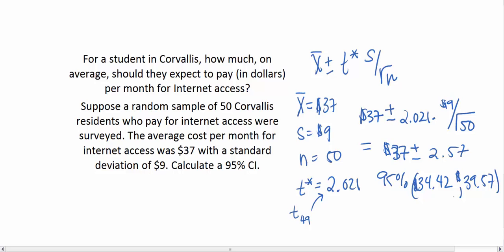So the 95% confidence interval for the estimated amount of money it's going to cost for internet access in Corvallis goes from $34.42 to $39.57.